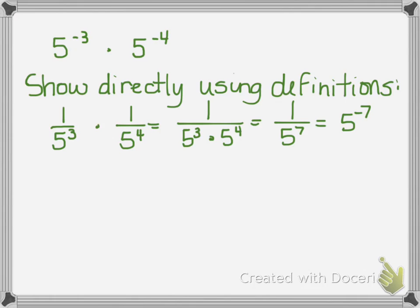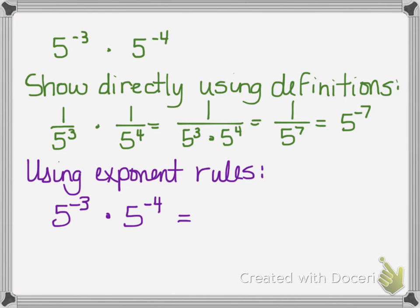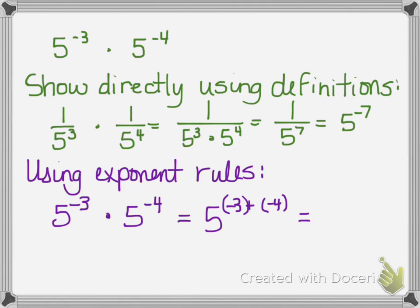Obviously a quicker way would be to use exponent rules. Using exponent rules for negative integers, this would be 5 to the negative 3 plus negative 4. I add the exponents when the bases are the same, which gives me 5 to the negative seventh.